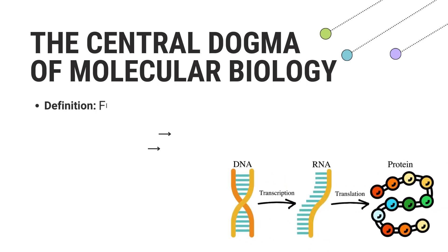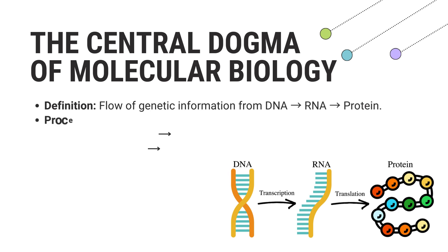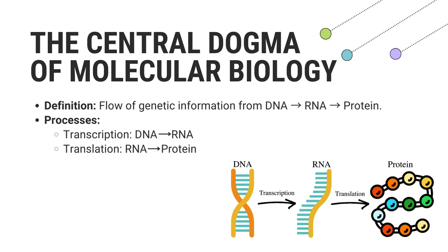The central dogma of molecular biology outlines the flow of genetic information in cells. It describes how DNA is transcribed into RNA, which is then translated into proteins. This process is fundamental to all living organisms and ensures that the genetic information encoded in our DNA is used to produce the proteins necessary for life. As shown in the diagram, the sequence of this flow is DNA → RNA → protein.